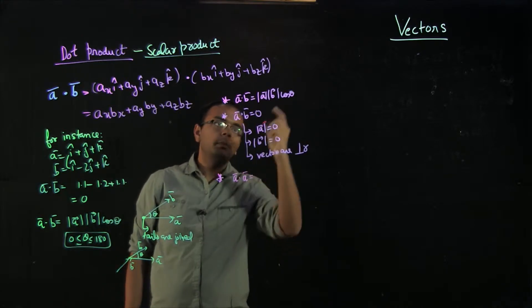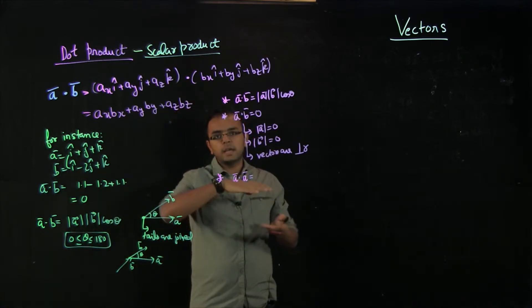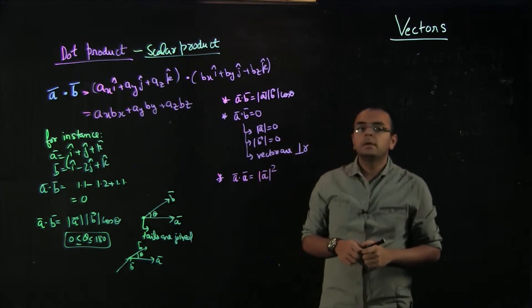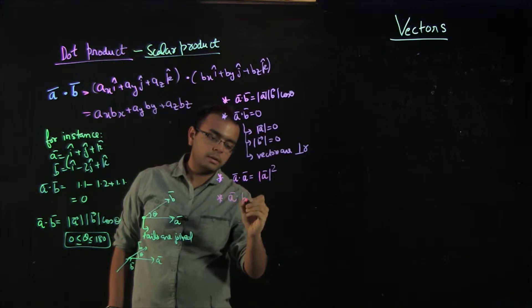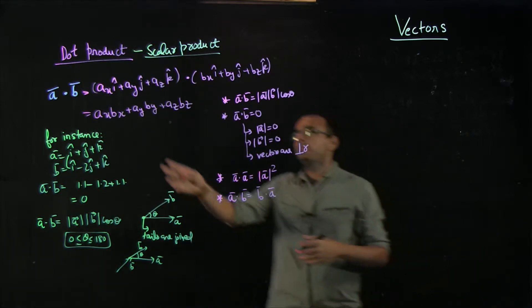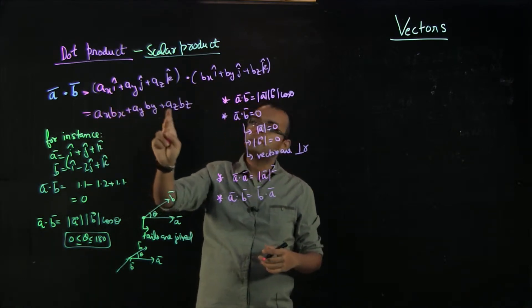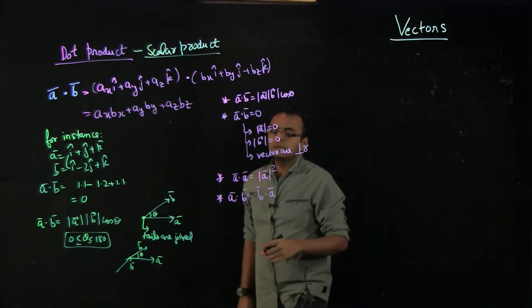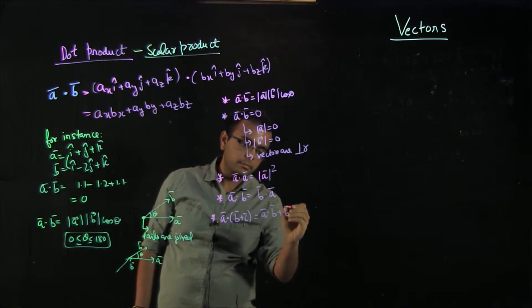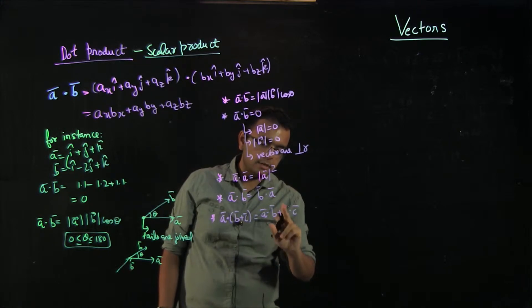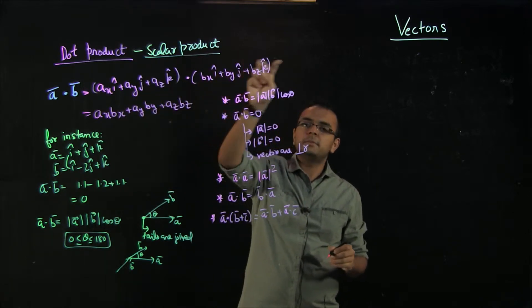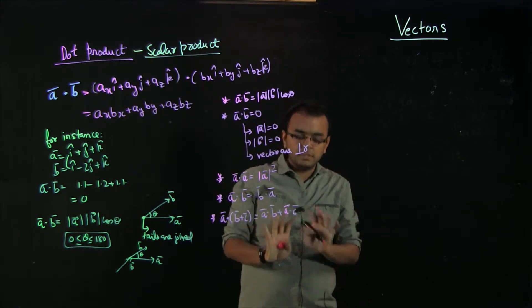Also, a·a equals |a||a|cosθ, and because the angle between a vector and itself is 0, this is nothing but |a|². Another important property is that a·b equals b·a — it is commutative — because if you expand it, bx·ax plus by·ay plus bz·az is the same as a·b. Additionally, a·(b + c) equals a·b plus a·c, which is the distributive property. I hope these properties are clear and useful.